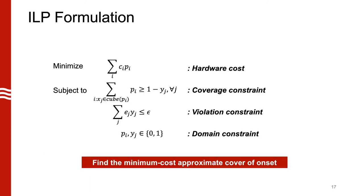We implement this through an ILP. The objective is to minimize the hardware cost of the cover. We have a coverage constraint requiring every element in the onset to be covered except those moved to the offset. We also have a violation constraint: the number of elements removed from the onset cannot exceed an epsilon cost. With this, we solve for the approximate cover of the onset and find this minimum cost cover.